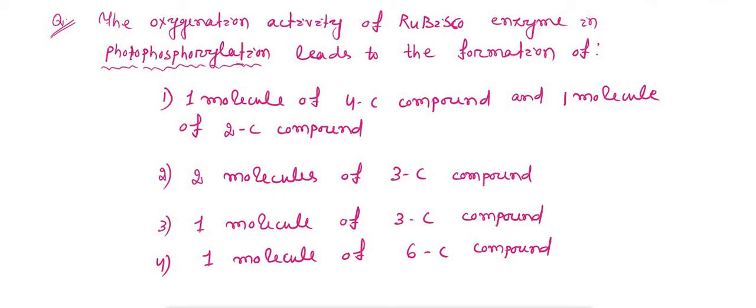While in photophosphorylation reaction, plants utilize the oxygen in the presence of light and produce carbon dioxide. And here, this photophosphorylation reaction is catalyzed by RuBisCO enzyme. In this process, one molecule of three carbon compound is formed. Hence the correct option is option 3, one molecule of three carbon compound.